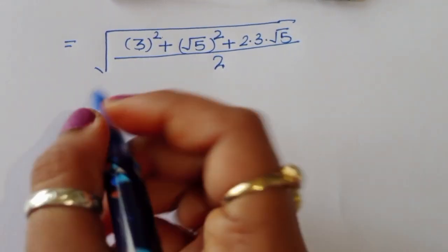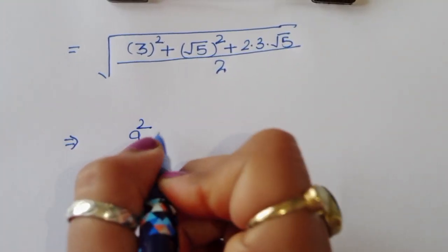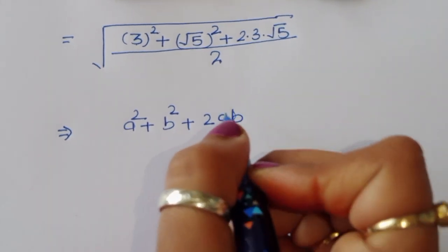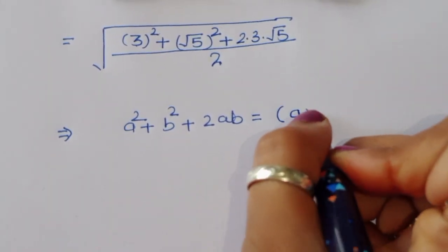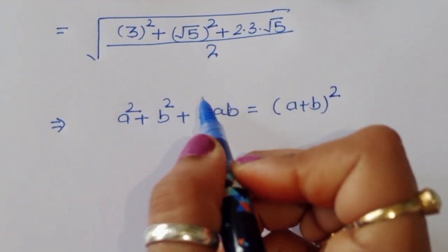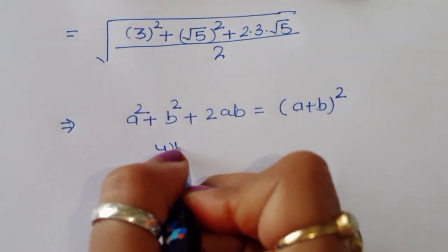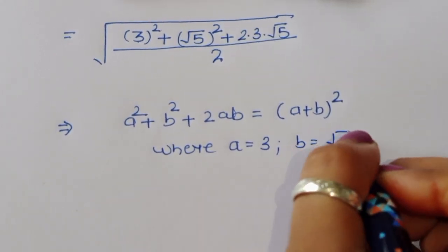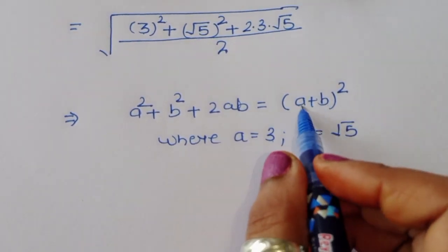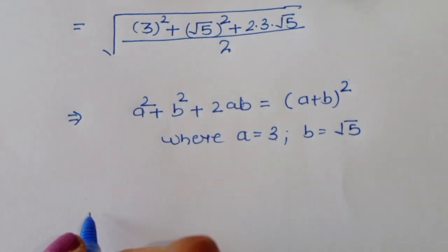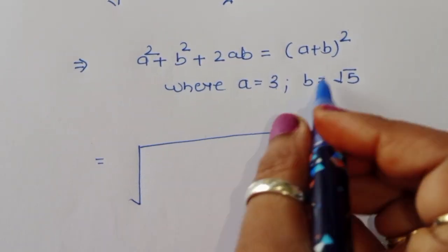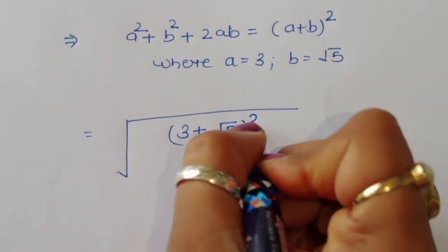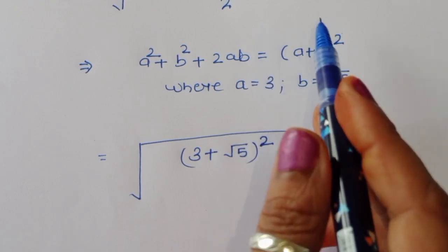Since a squared plus b squared plus 2ab equals (a plus b) squared, with a equal to 3 and b equal to square root of 5, we can write the numerator as (3 plus square root of 5) squared. So the whole expression becomes square root of (3 plus square root of 5) squared plus b squared plus 2ab, divided by 2.